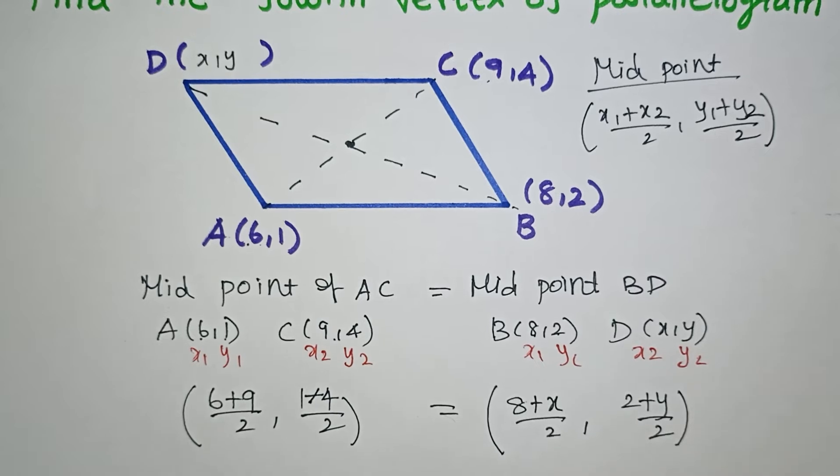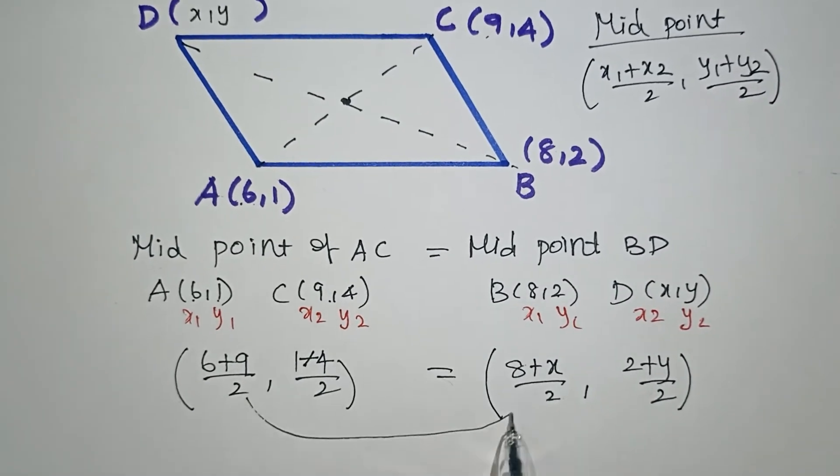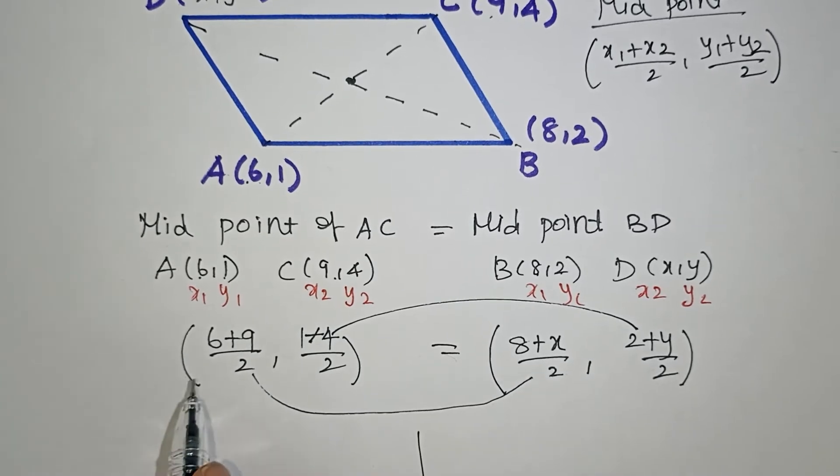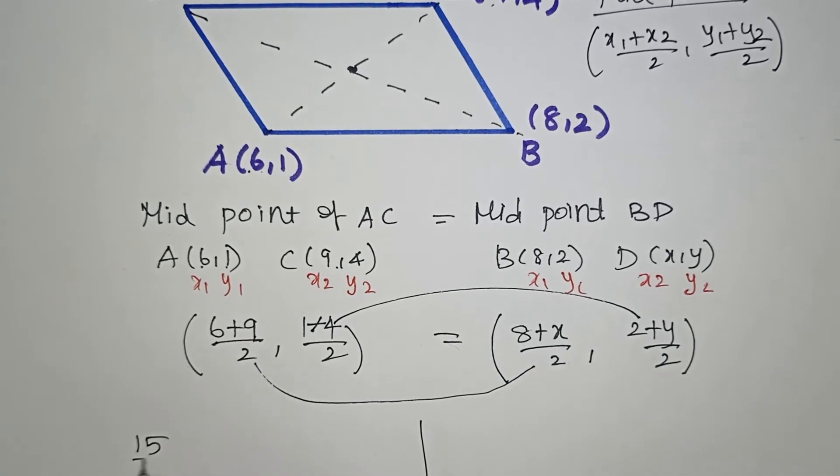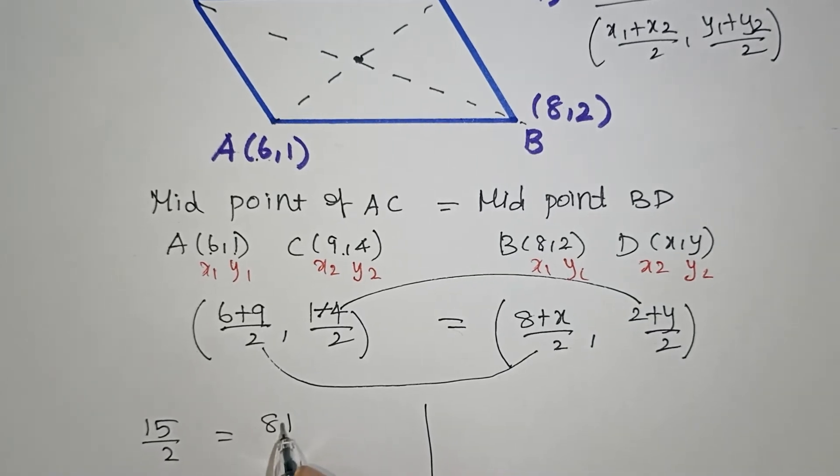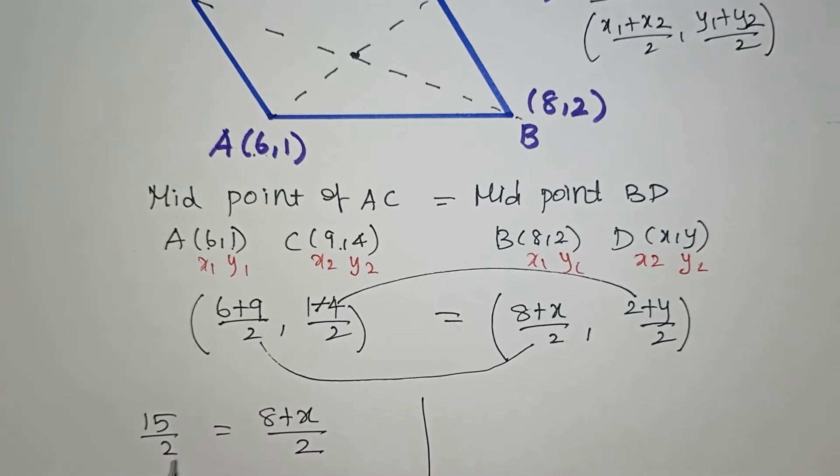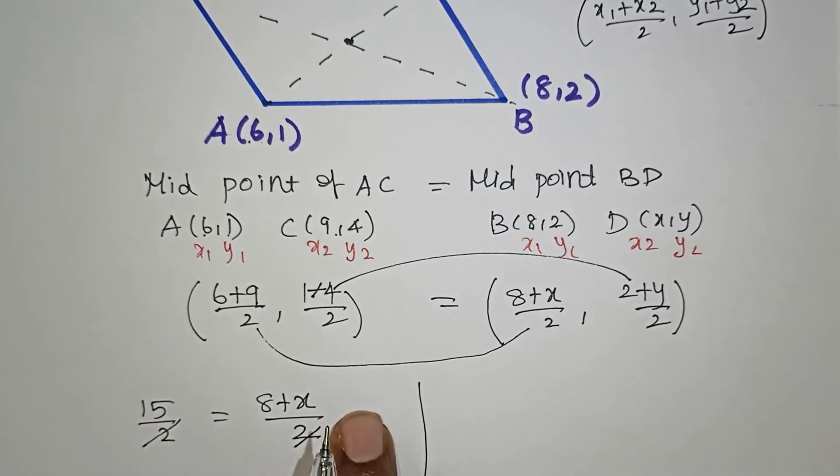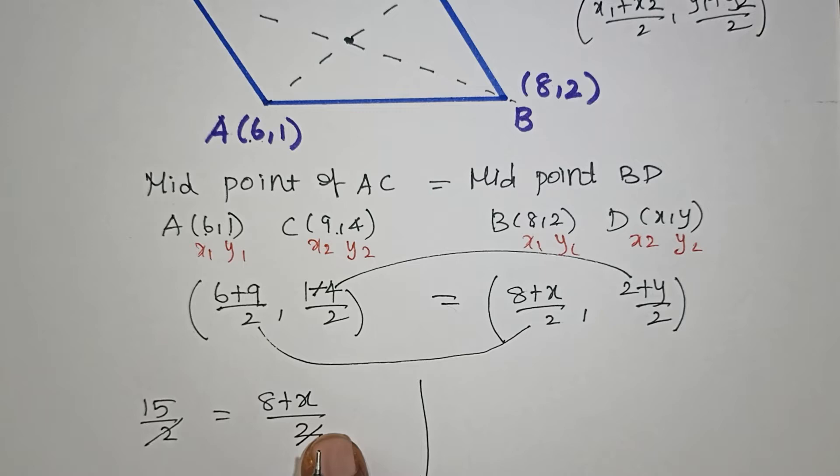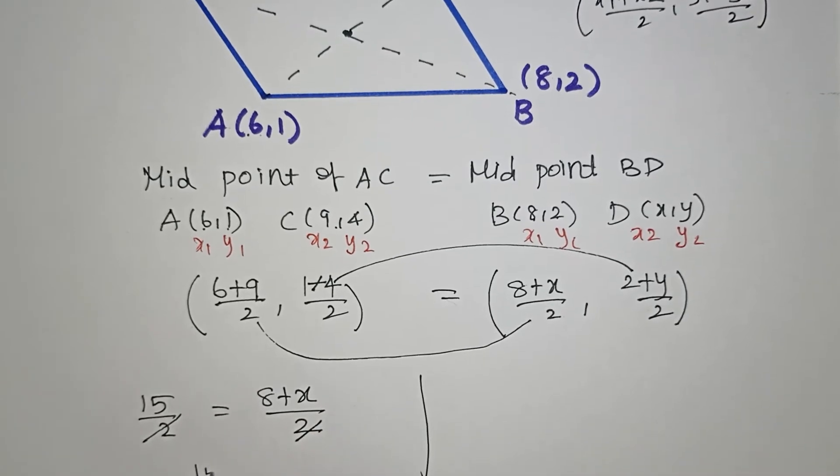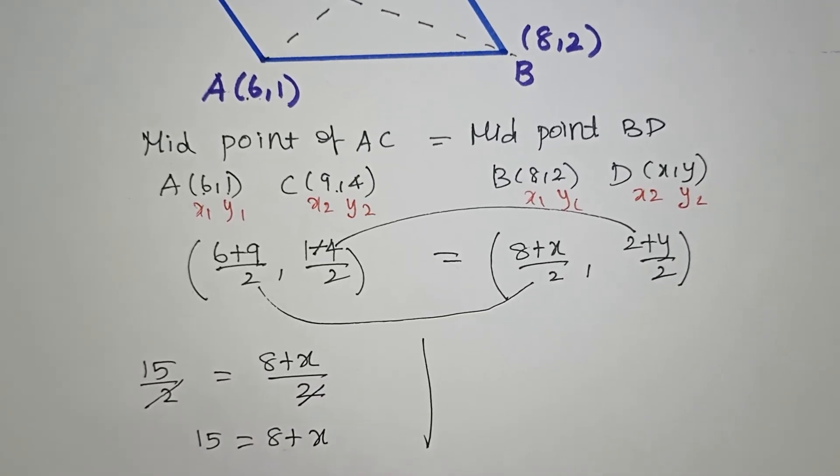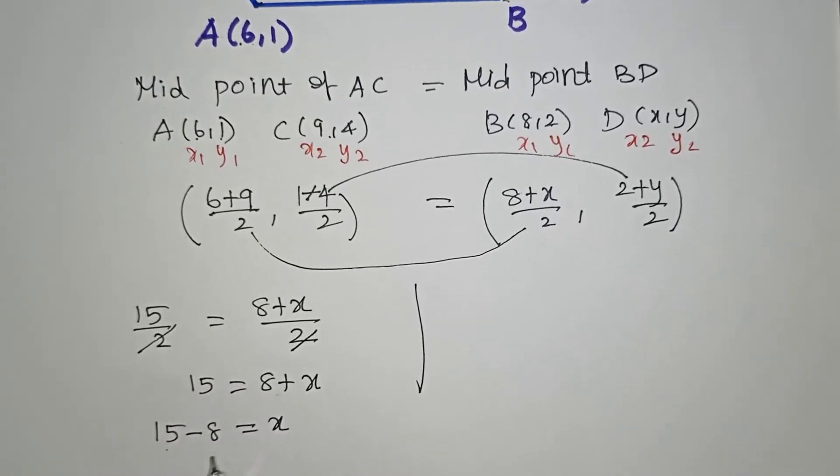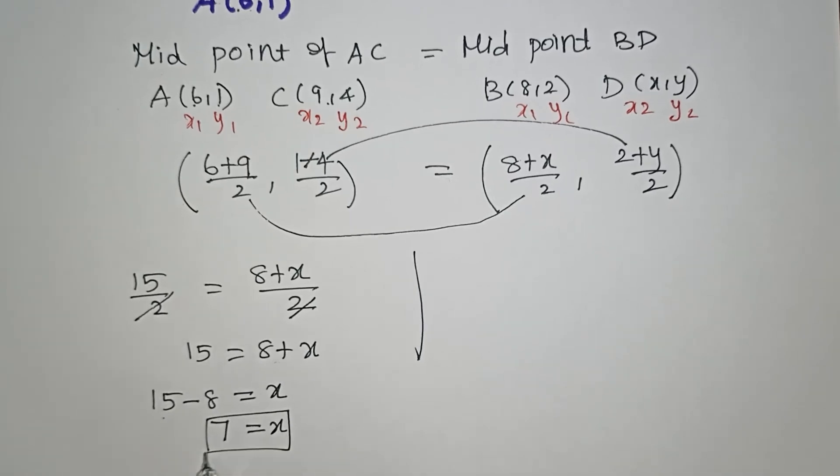Now equate the points. The first coordinates are equal and the second coordinates are equal. So 15 by 2 equals 8 plus X by 2. Canceling the denominators, 15 equals 8 plus X. Bringing 8 to the left side: 15 minus 8 equals X, so X equals 7.